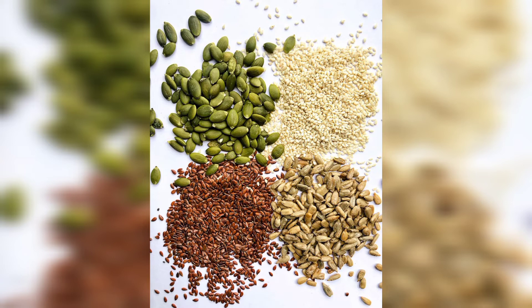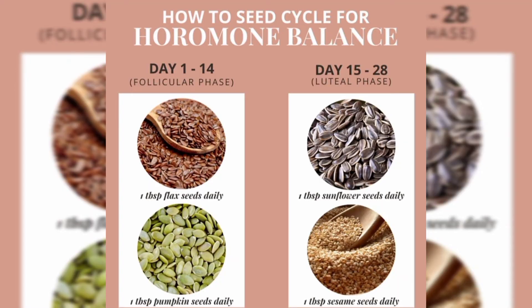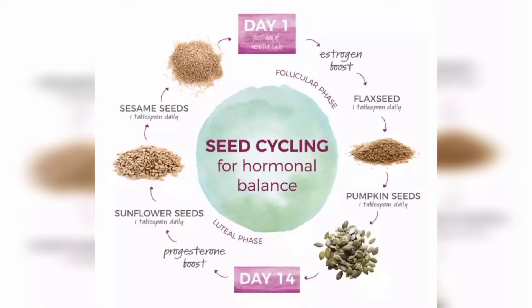The first half is the follicular phase. The second half is the follicular phase. The follicular phase involves estrogen and progesterone. The first half has two ingredients. The second half — all right, these two progesterone hormones are very helpful.